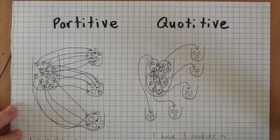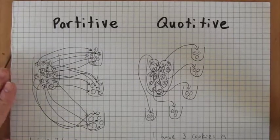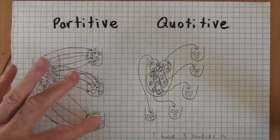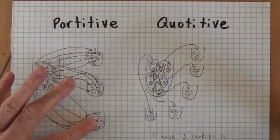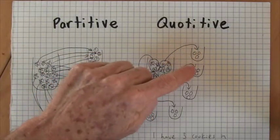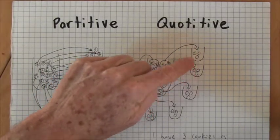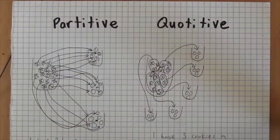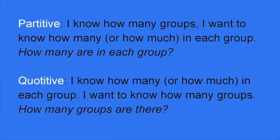With partitive division, we know how many groups there are and want to know how many are in each group. With quotative division, we know how many are in each group and want to know how many groups there are. If this is new for you, you might want to take some time to practice identifying when situations are partitive and when they are quotative.